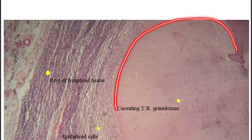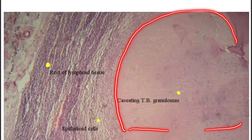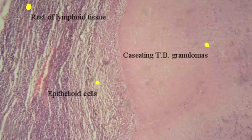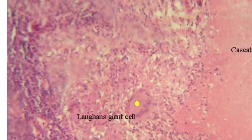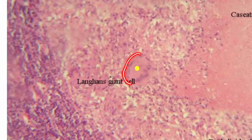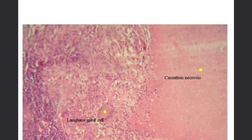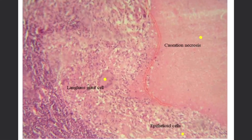Let's see in the histopathological slide. Here, the normal granuloma has become the caseating tuberculosis granuloma. Here are the epithelioid cells present. The Langhans giant cell is also present — multiple epithelioid cells fuse to form it. Here are the nucleus and another area of caseous necrosis which causes the caseating granuloma.